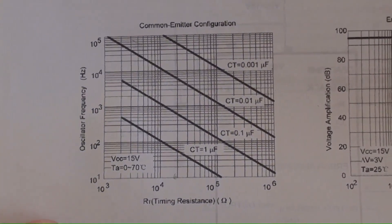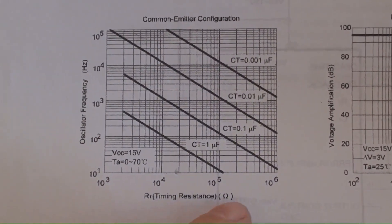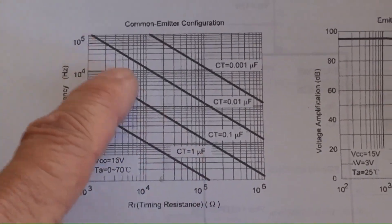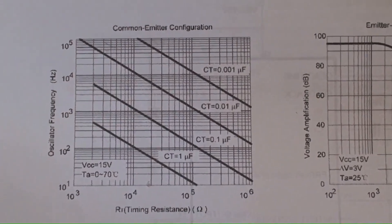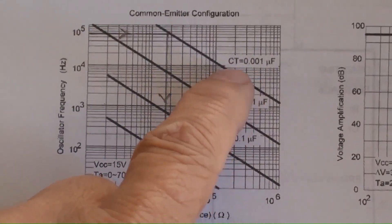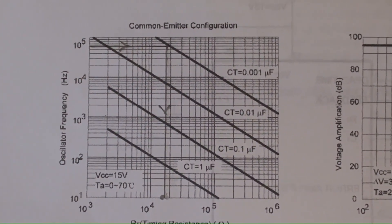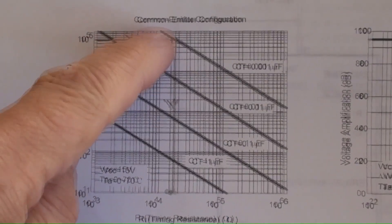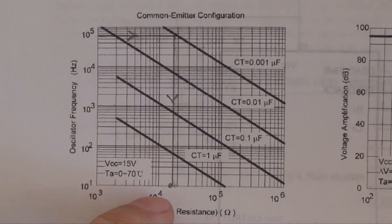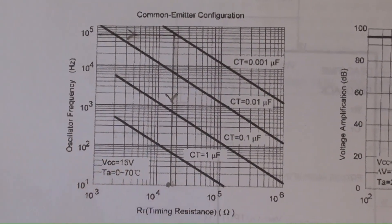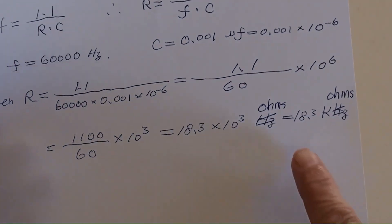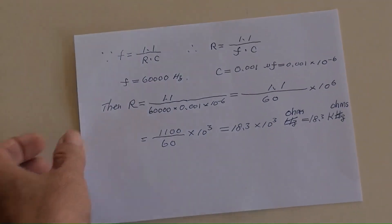The vertical axis of the graph represents the oscillator's frequency in Hertz. The horizontal axis represents the resistor's value in Ohms. Each line inside represents a capacitor's value in µF. Choosing the 0.001 µF line, starting from the left at 60,000 Hz, draw a horizontal line to meet the 0.001 µF line. From there, draw a vertical line to the bottom of the graph, which indicates approximately 18,000 Ohms.